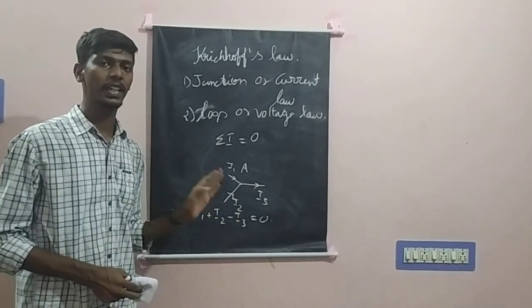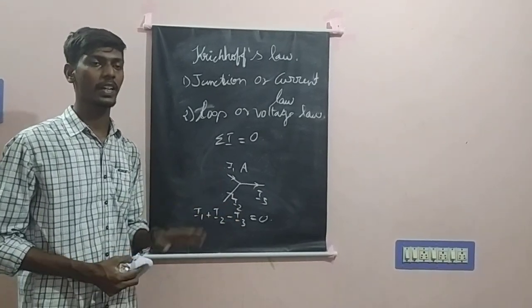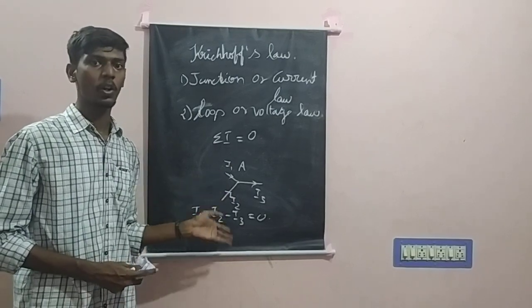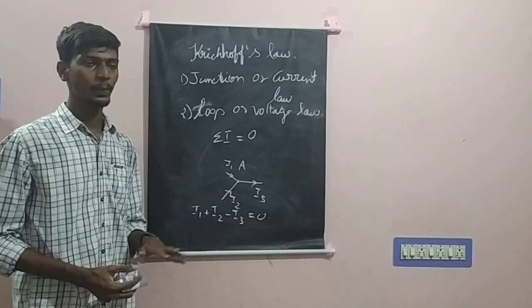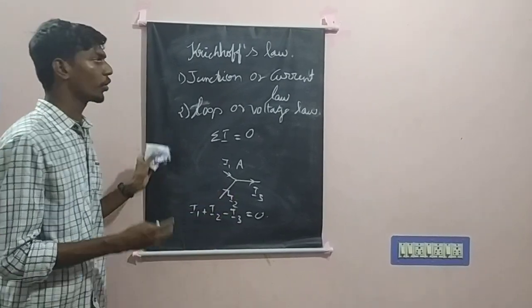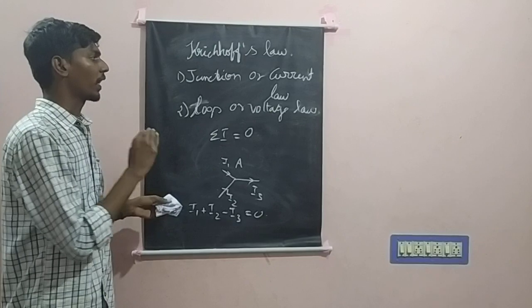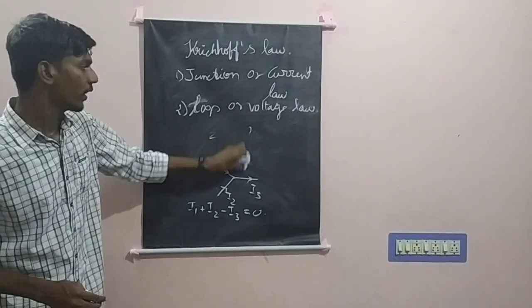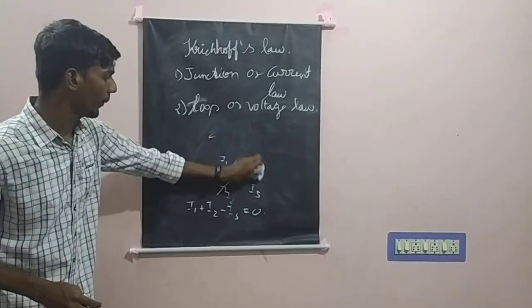Because at this junction, the electric charge can neither be built up nor disappear. So this is the current law. Moving on to the voltage law.